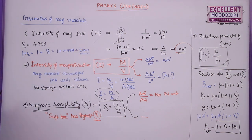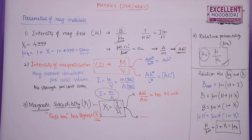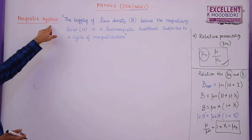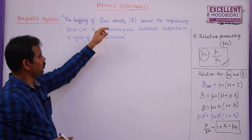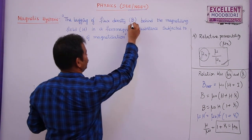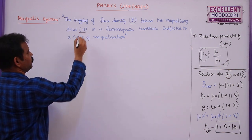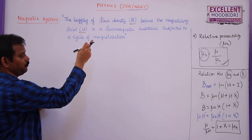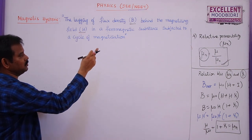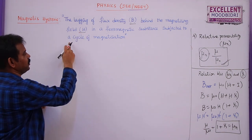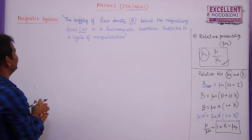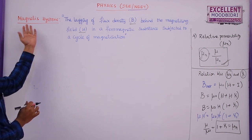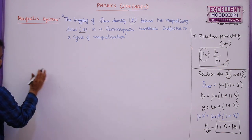The lagging of flux density B behind the magnetizing field H in a ferromagnetic substance subject to a cycle of magnetization is called magnetic hysteresis.